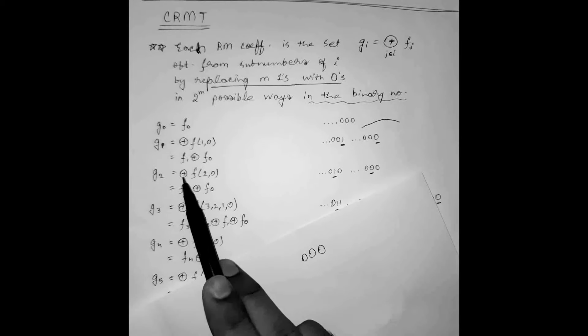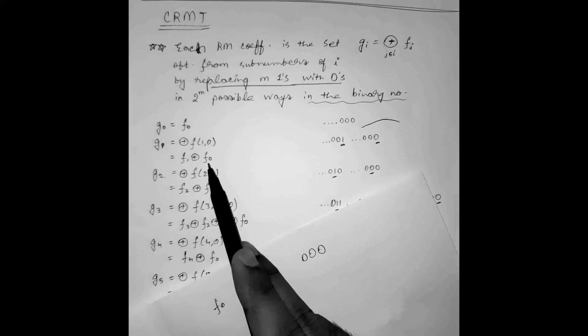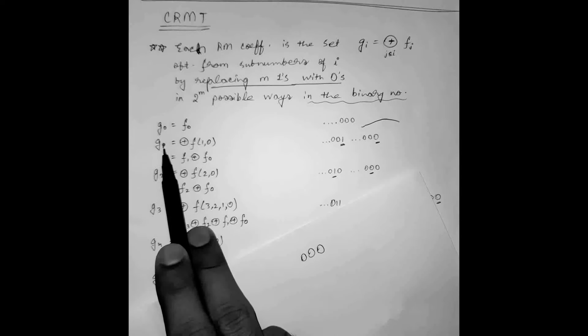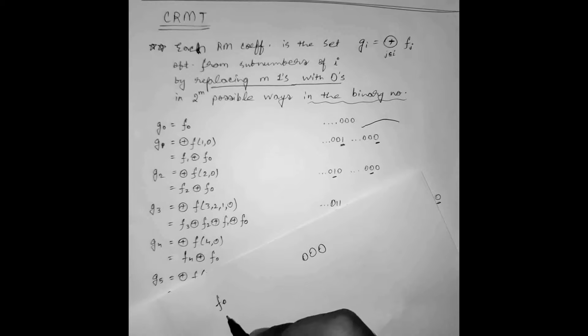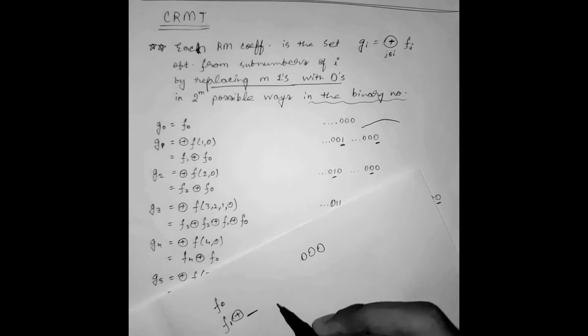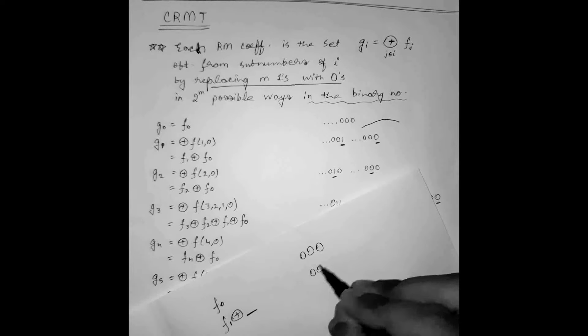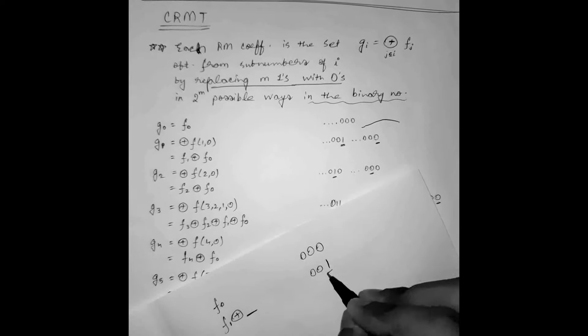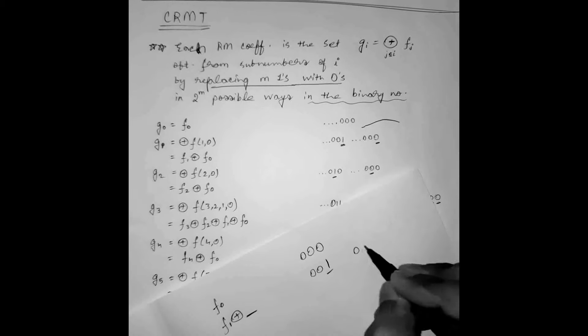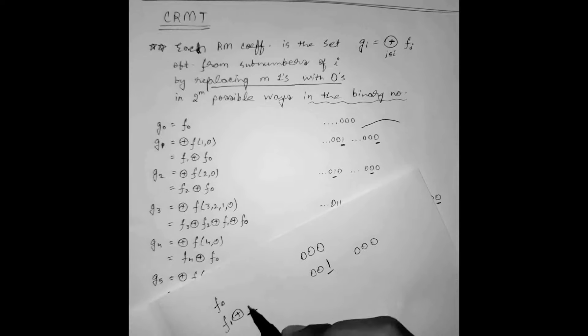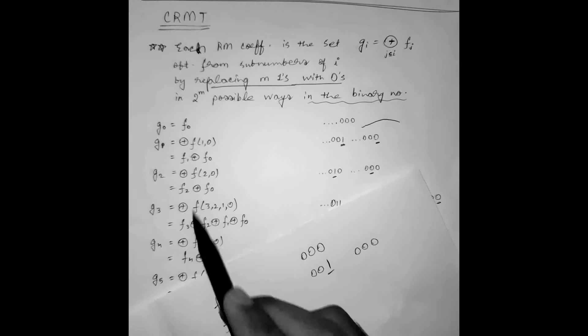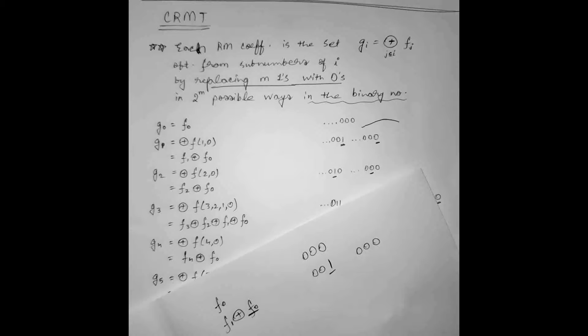For G1 term, this Reed Muller coefficient, we are XORing F1 and F0. Why is it so? Let us try to understand the functioning. So write it as F1 XOR with, let's see if any of the terms will come here or not. So F1 we can represent it by 0, 0, 1. Here we can see 1. We have to make it 0. So another term will come 0, 0, 0. Now it has been replaced. One bit will be replaced one time only. So now we will replace F1 XOR F0.